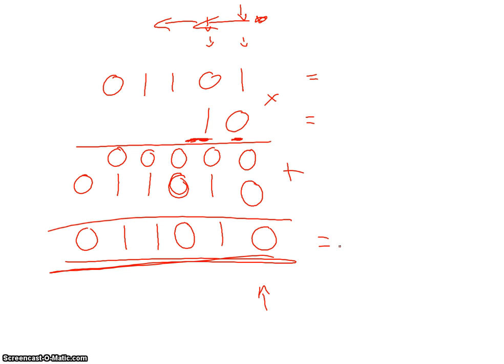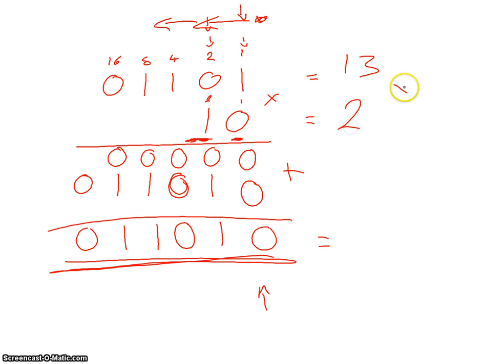We'll convert to denary to check our results. For the top number we have a one, no twos, a four, an eight, and no sixteens — so eight plus four plus one is thirteen. On the bottom we have no ones and a two, so that's two. We're hoping for a result of twenty-six.